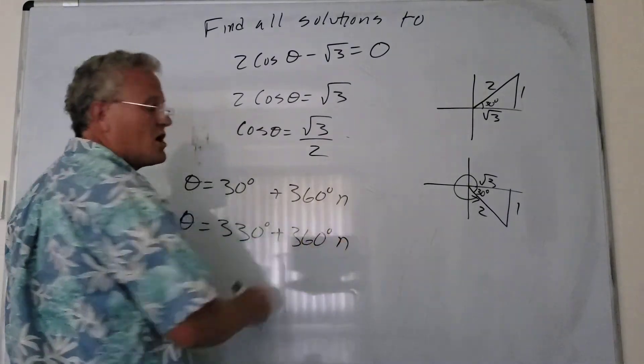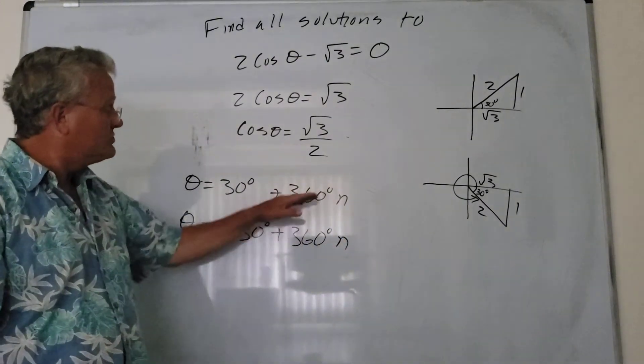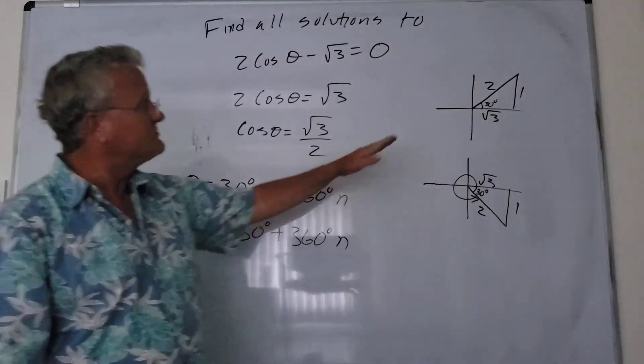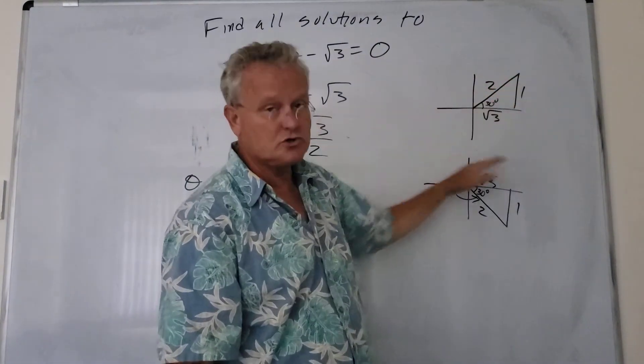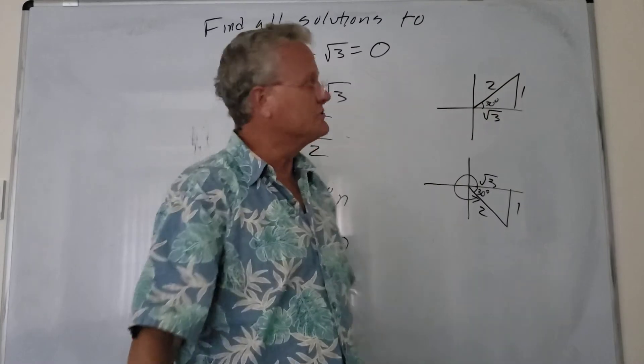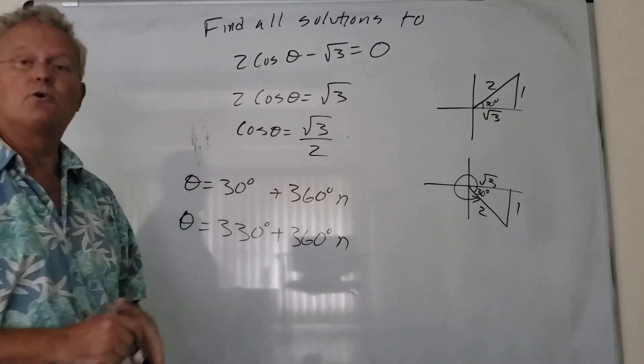And this is where n represents an integer. So any integer multiple of 360 degrees is going to give us a coterminal angle, which is another solution to this particular equation.